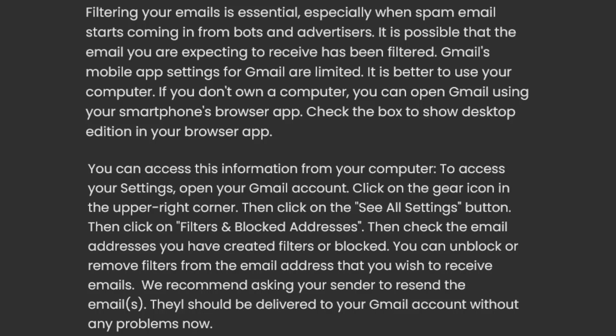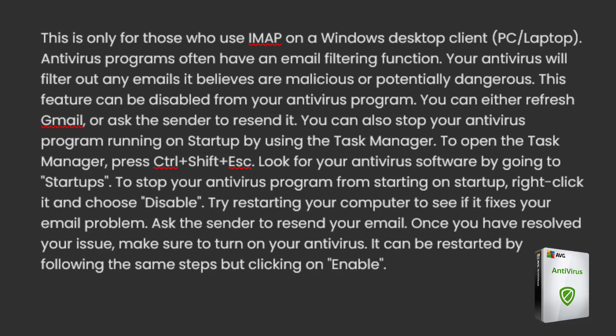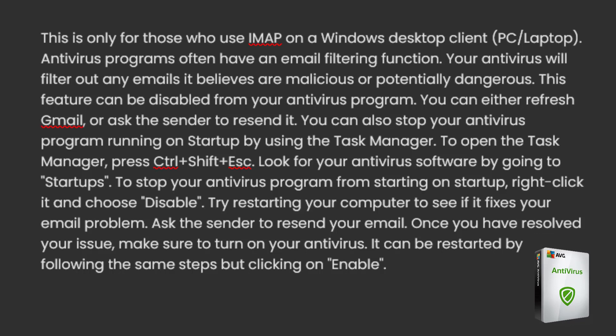12. Try disabling antivirus on PC. This is only for those who use IMAP on a Windows desktop client. Antivirus programs often have an email filtering function, and your antivirus will filter out any emails it believes are malicious or potentially dangerous. This feature can be disabled from your antivirus program. You can then refresh Gmail or ask the sender to resend it. You can also stop your antivirus from running on startup using the Task Manager — press Ctrl + Shift + ESC, go to Startups, find your antivirus software, right-click it and choose Disable. Restart your computer to see if it fixes the problem. Once resolved, make sure to turn your antivirus back on by following the same steps and clicking Enable.